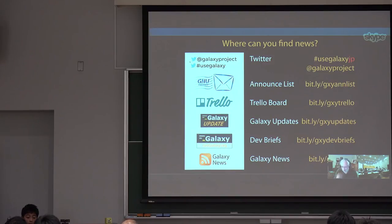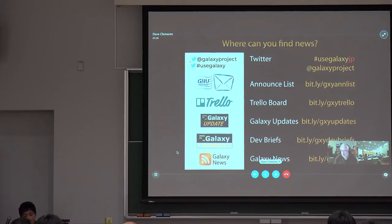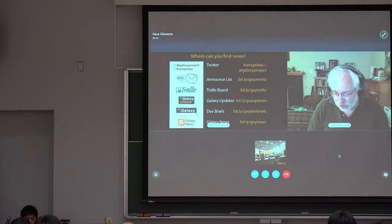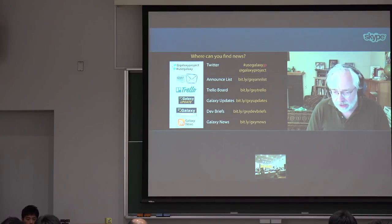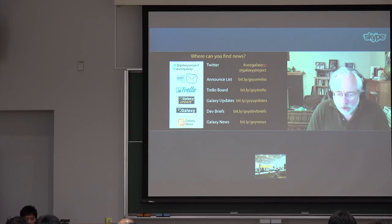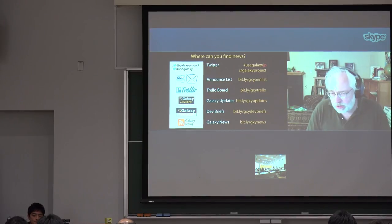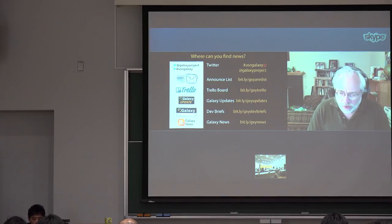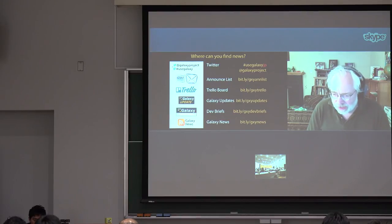We have a low-volume mailing list, Galaxy Announce — about three announcements a month go to that. We also have a travel board, which is useful for submitting bugs and feature requests. You can track what the team is working on, what they're prioritizing, what's going to happen next. You can also vote on issues and feature requests. We have a monthly newsletter, the Galaxy Update. We release new versions of Galaxy every two to three months, and a development news brief goes out with that.